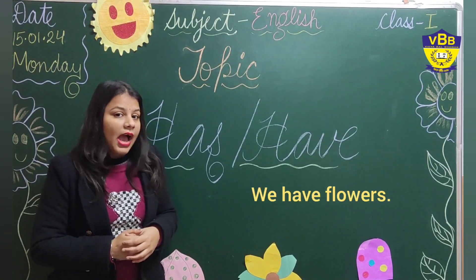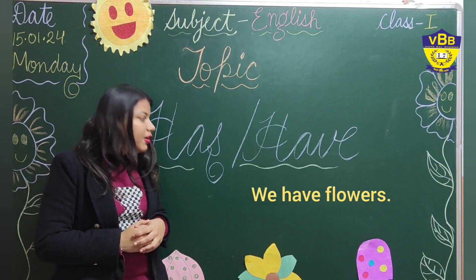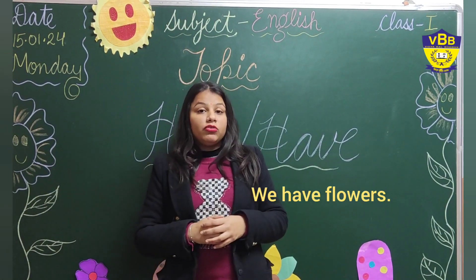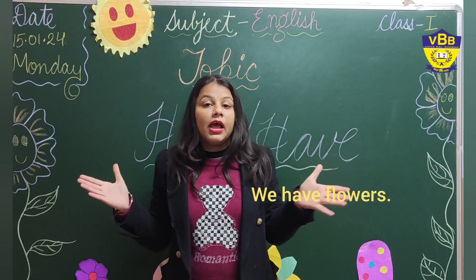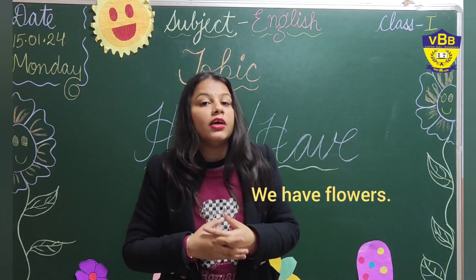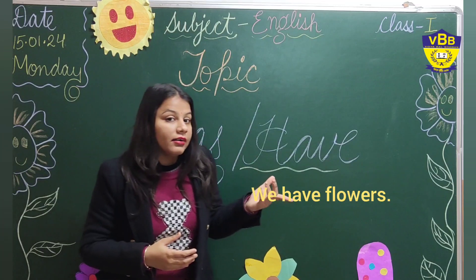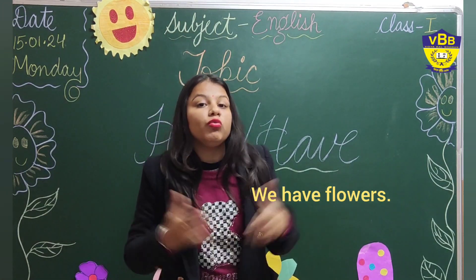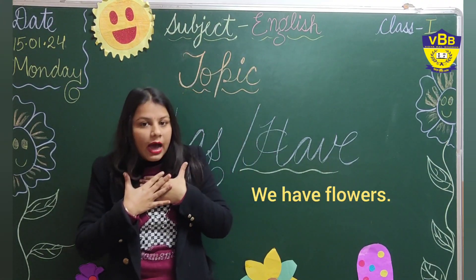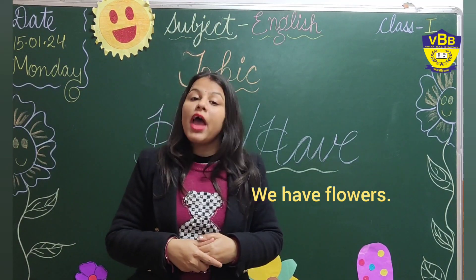Now see one more example: We have flowers. Here we are talking about so many people, that is why we have used 'we.' So we have flowers — the flowers belong to us. That is why we have used 'have.'